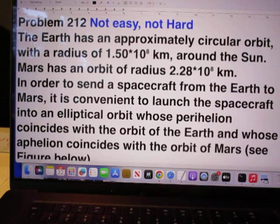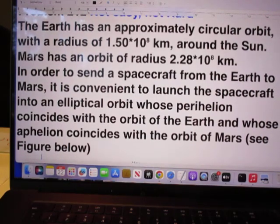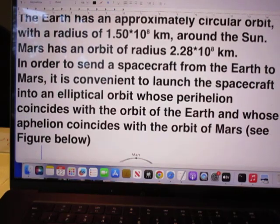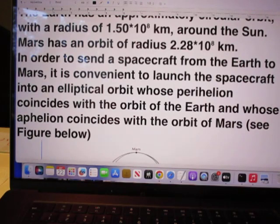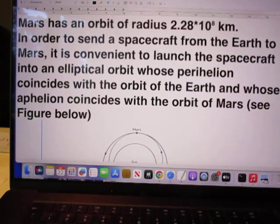The Earth has an approximately circular orbit with a radius of 1.50 times 10 to the 8 kilometers around the sun. Mars has an orbit of radius 2.28 times 10 to the 8 kilometers.